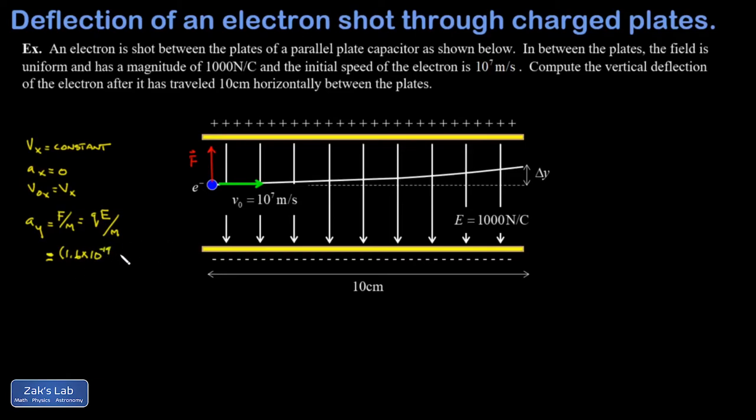The charge on an electron is equal to the elementary charge, 1.6 times 10 to the negative 19 coulombs. The strength of my electric field is 1000 newtons per coulomb, so I can see I'm getting newtons out of that numerator—that's good. And then the mass of an electron you might have to look up is 9.11 times 10 to the negative 31 kilograms, and so I end up with an acceleration of 1.76 times 10 to the 14 meters per second squared for this electron.